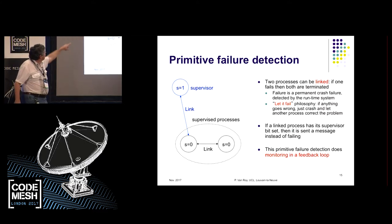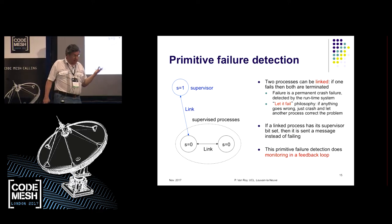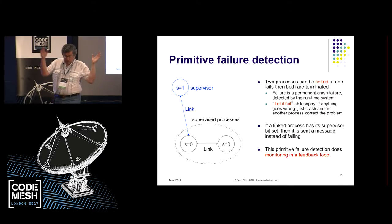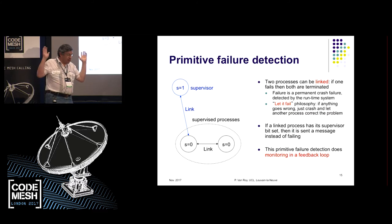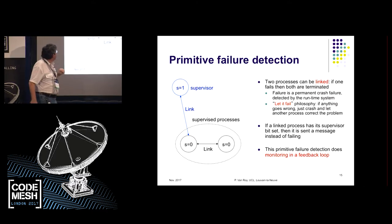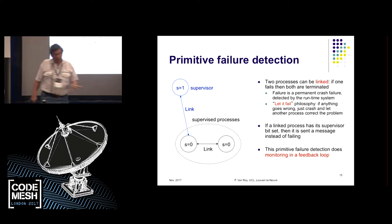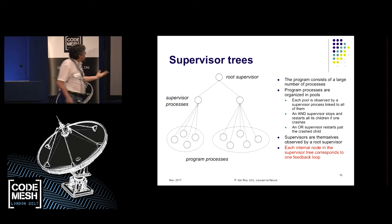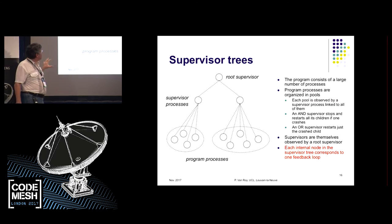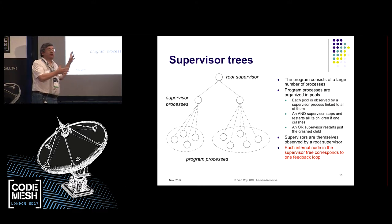Primitive failure detection: processes can be linked, and if one fails, the other is terminated. Failure is mapped to permanent crash — any kind of problem becomes a permanent crash. This simplifies things; you don't want to correct corrupted states. If a process has the supervisor bit set to one, it doesn't fail but receives a message informing it that the other processes have failed. This failure detection is actually monitoring in a feedback loop.